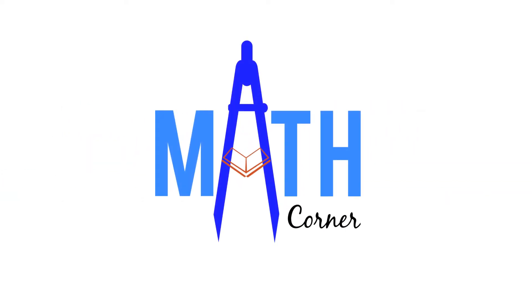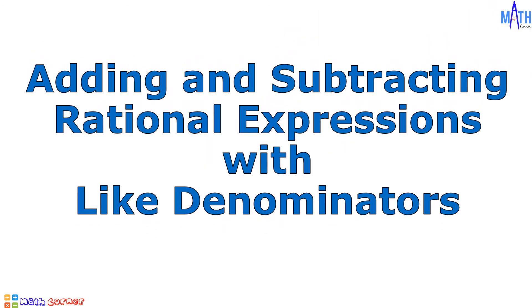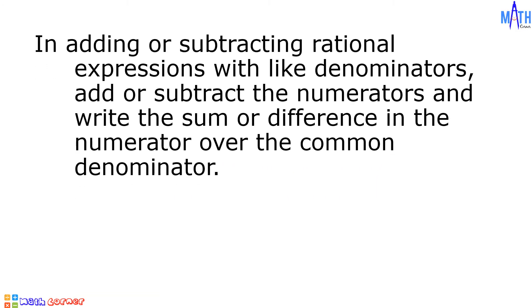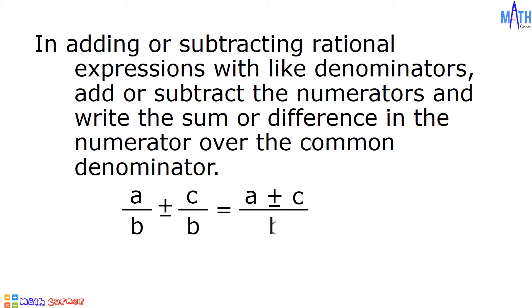Hello everyone! Welcome to Math Corner. In adding or subtracting rational expressions with like denominators, add or subtract the numerators and write the sum or difference in the numerator over the common denominator. In symbol, a over b plus or minus c over b is equal to a plus or minus c all over b, where b is not equal to zero.